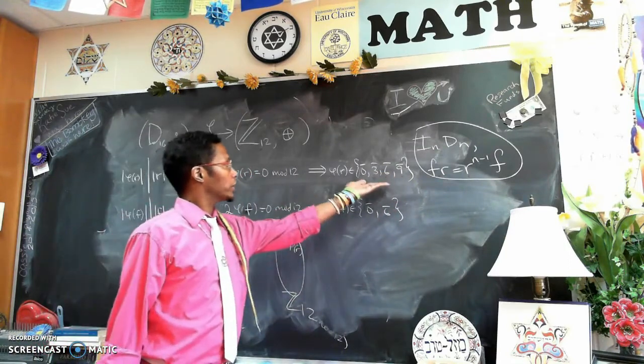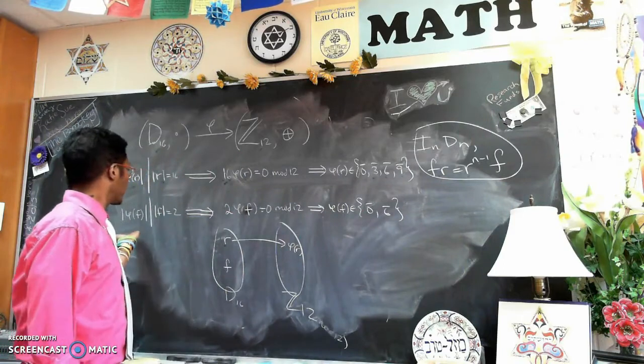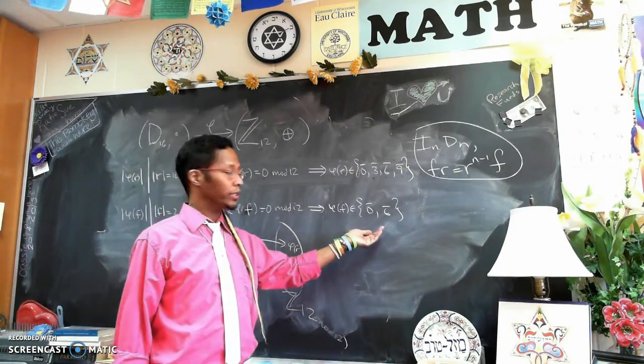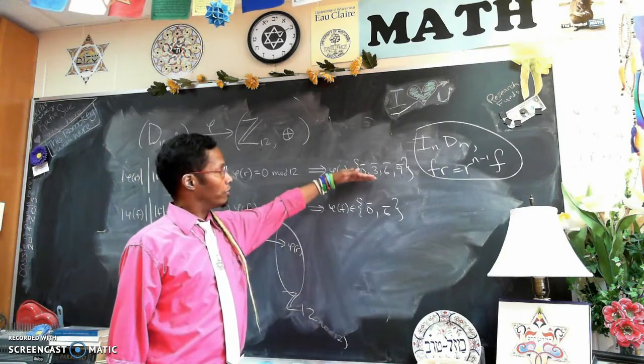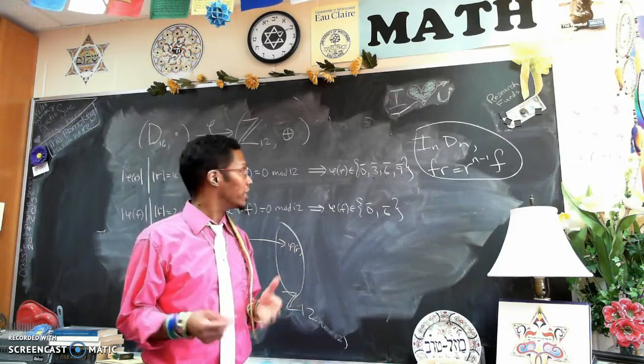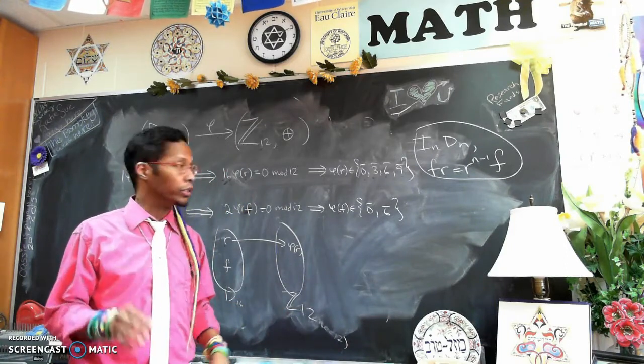So there's four choices for where R can go. By similar reasoning, there's two choices for where we can send F. So there would be 4 times 2, so there would be 8 choices for the homomorphism φ. But that's not necessarily true. We have to check the other condition.